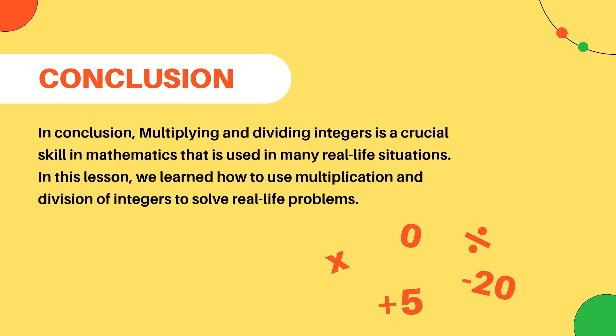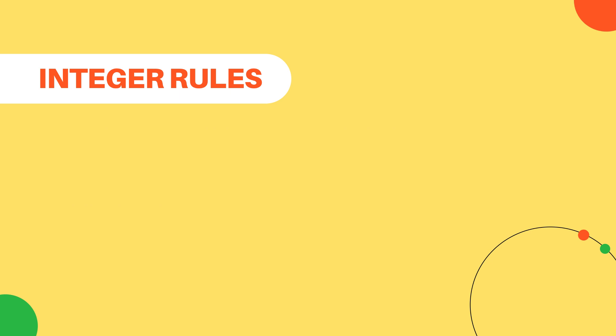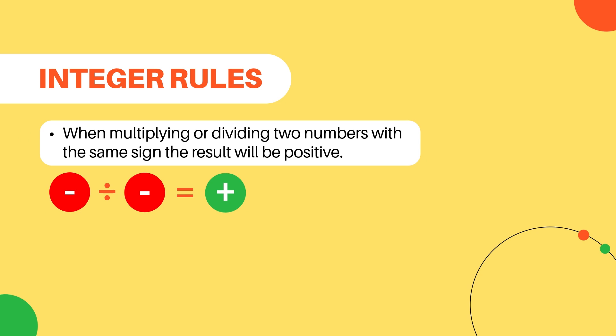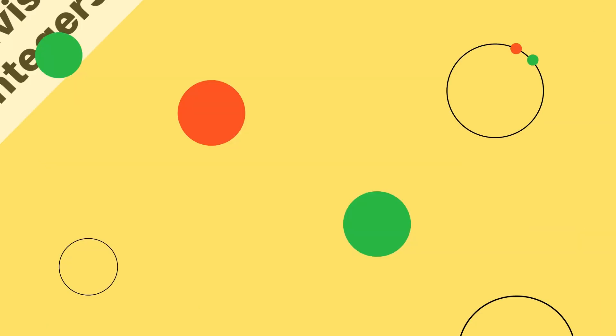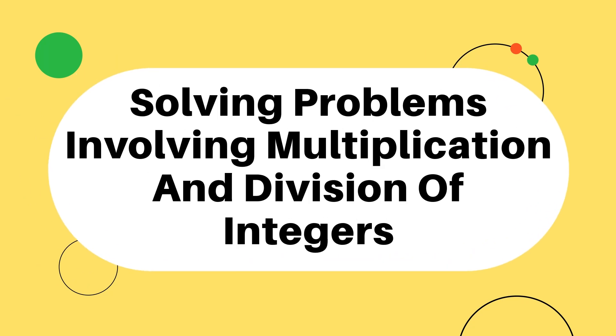In conclusion, multiplying and dividing integers is a crucial skill in mathematics that's used in many real-life situations. In this lesson, we learned how to use multiplication and division of integers to solve real-life problems. We also reviewed the two rules: when multiplying or dividing two numbers with the same sign, the result is positive; and when multiplying or dividing two numbers with different signs, the result is negative. You can now use these rules to practice some calculations with multiplying and dividing integers. Good luck!